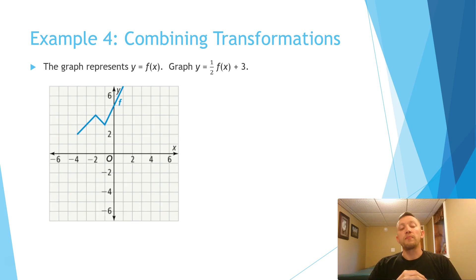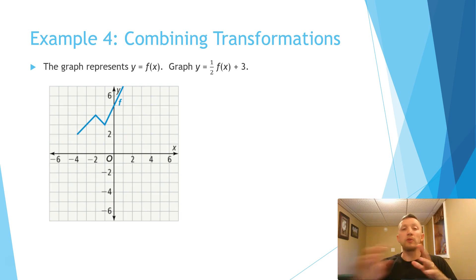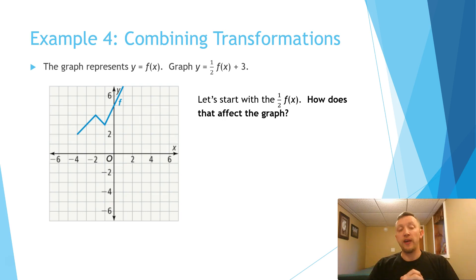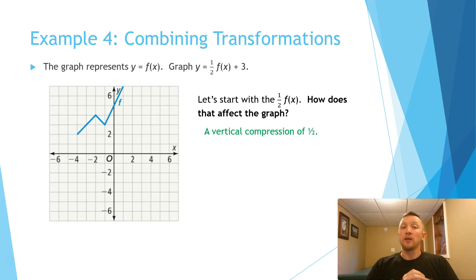Let's try another one. This time we have the graph of y equals one half f of x plus 3. Again, we don't want to do all this at once — we're going to break it up into parts. Let's start with the one half f of x. That's not happening directly with the x; it's happening after the fact, so this is going to be a vertical compression to be half the size vertically.